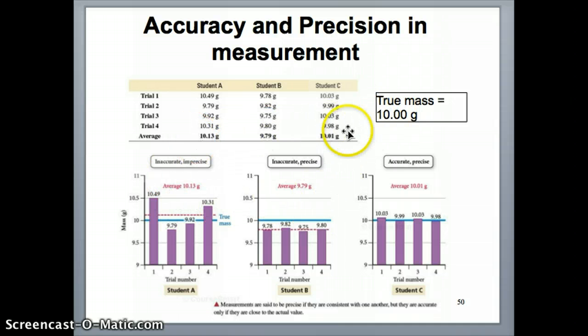So just by comparing these numbers, these averages to true value, you can tell that student C has the best accuracy and both student A and B have some issue with their accuracy.